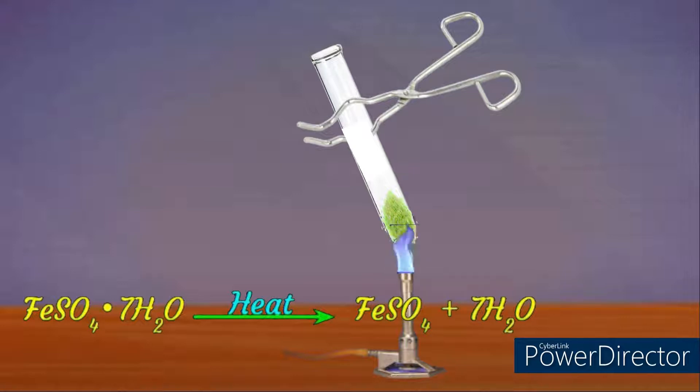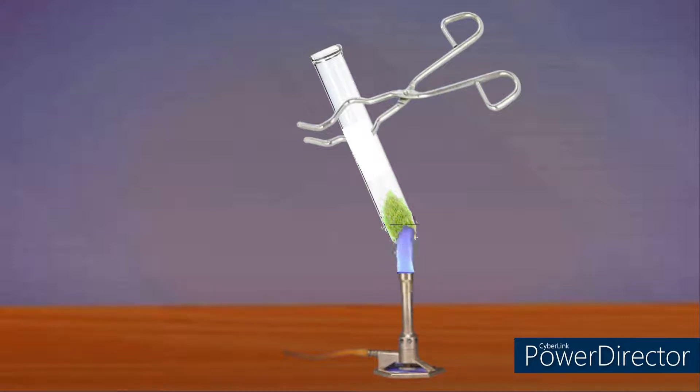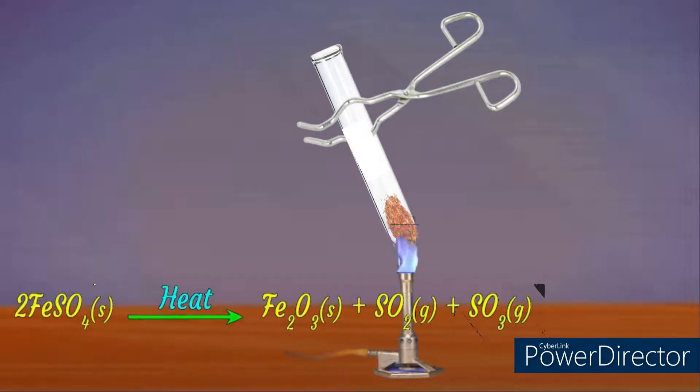On further heating of ferrous sulfate, it decomposes to form ferric oxide, sulfur dioxide, and sulfur trioxide. Reddish-brown color residue, sulfur dioxide, and sulfur trioxide gases have a foul smell. The equation for this is 2FeSO4 gives rise to Fe2O3 plus SO2 and SO3 in the presence of heat.